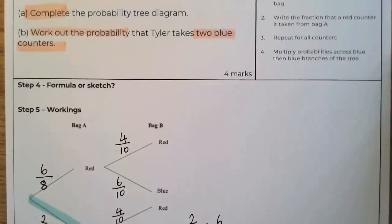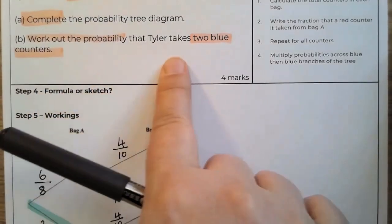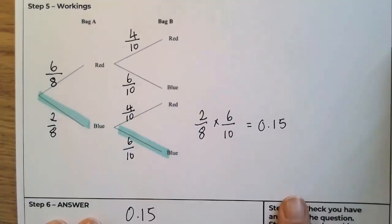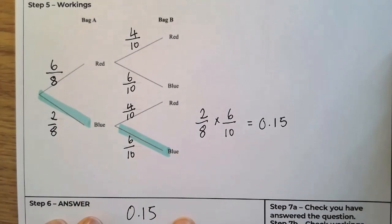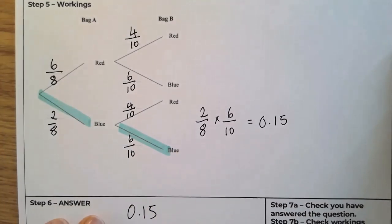Have you actually answered the question? It says work out the probability that Tyler takes two blue counters. That's the two blue counters. That's my probability and check your workings.